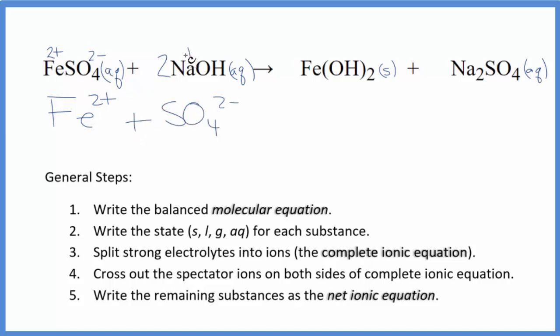Sodium is in group 1, the whole hydroxide ion is 1 minus. So I have 2 sodium ions and 2 hydroxide ions. So these are the reactants in our net ionic equation. For the products,